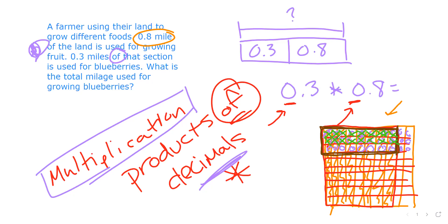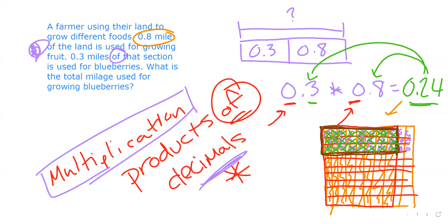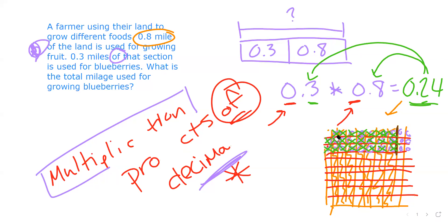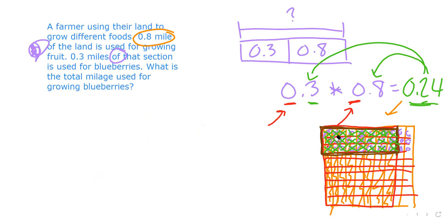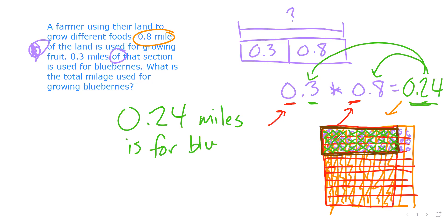...nine, ten, eleven, twelve, thirteen, fourteen, fifteen, sixteen, seventeen, eighteen, nineteen, twenty, twenty-one, twenty-two, twenty-three, twenty-four hundredths. So the answer is twenty-four hundredths. You can see that twenty-four hundredths is smaller than eight tenths and also smaller than three tenths, because we have a two in the tenths place. Our labeled answer is twenty-four hundredths of a mile used for blueberries. This makes sense because we're multiplying numbers smaller than one.